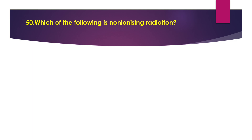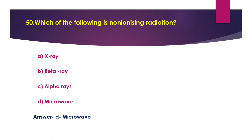Question 50: Which of the following is non-ionizing radiation? Option A: X-ray. Option B: beta rays. Option C: alpha rays. Option D: microwave. The answer is option D, microwave. Microwaves are non-ionizing radiation and do not have the same risk as X-rays or other types of ionizing radiation. However, microwave radiation can heat body tissues the same way it heats food. Exposure to high levels of microwaves can cause skin burns.